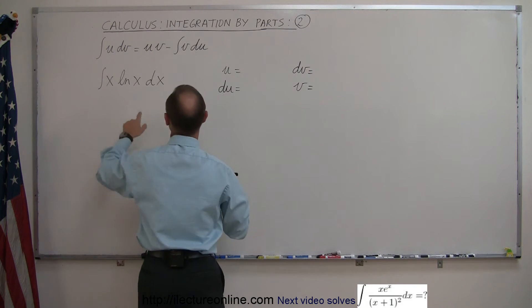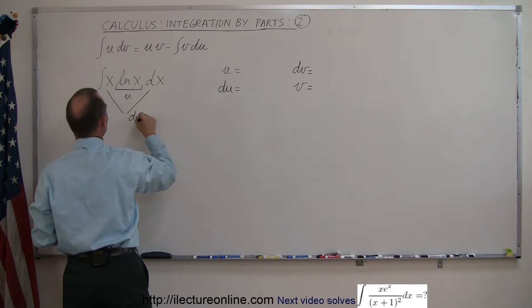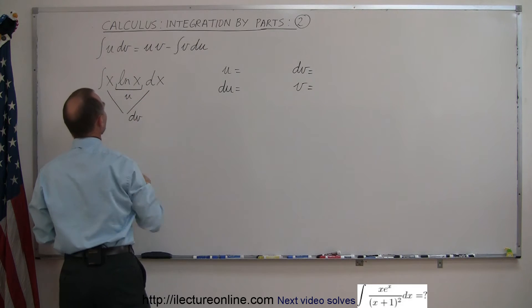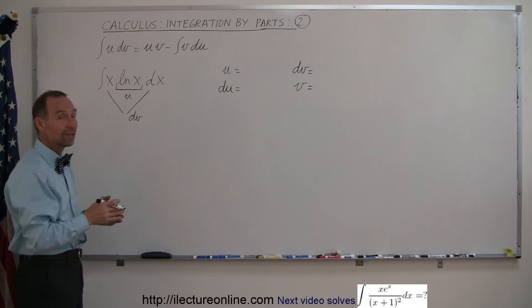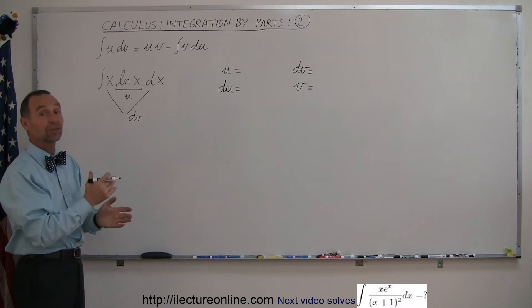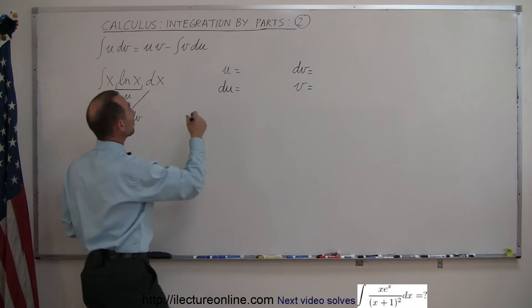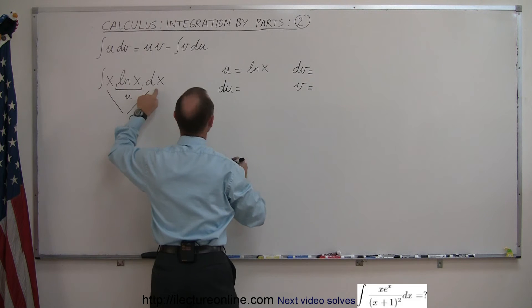So let's try that. u is going to represent the natural log of x and x dx is going to be your dv. So we have u and dv identified. Now, sometimes it happens that you choose u and dv, try to solve it, and you don't get anywhere. Don't be afraid to try something different. So let u equal the natural log of x and dv equal x dx.